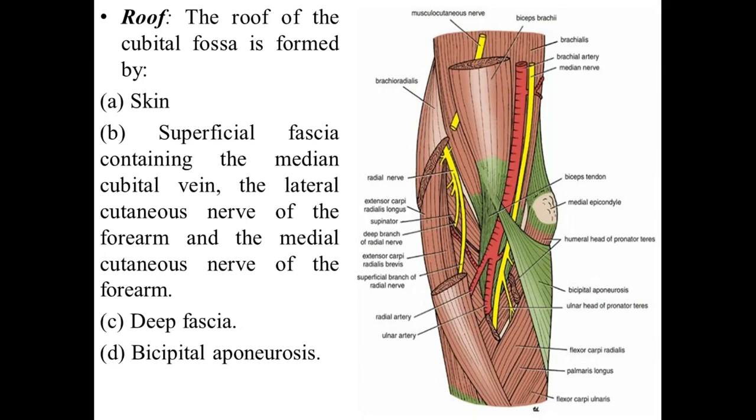The roof of the cubital fossa is formed by, first, the skin which contains the medial cubital vein. Second is the lateral cutaneous nerve of the forearm, and the third is the medial cutaneous nerve of the forearm. These three things are found in the superficial fascia. Below that is the deep fascia, which also forms part of the roof.